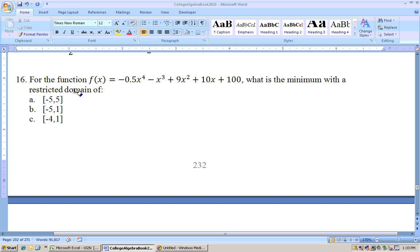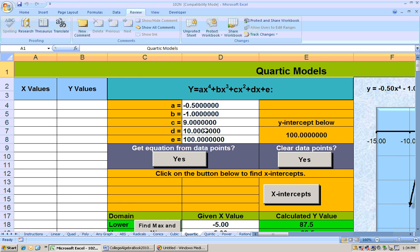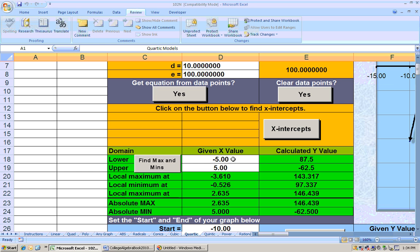Let's go to problem 16. It says for this function, which is a quartic equation, what is the minimum with these different restricted domains? So go to your quartic sheet and put in your coefficients, and the first restricted domain is -5 to 5. Remember to click the Find Max/Min button.